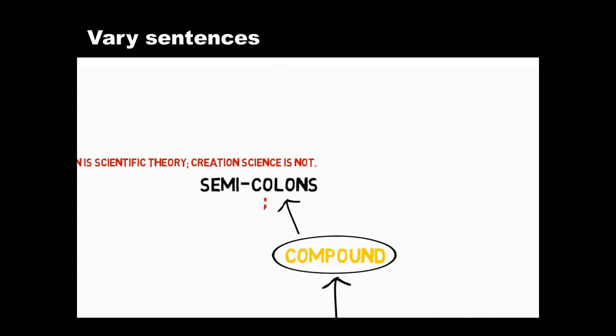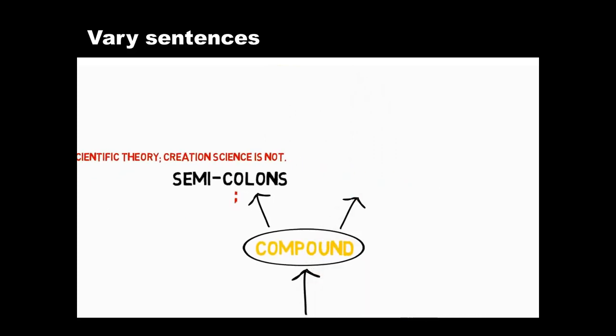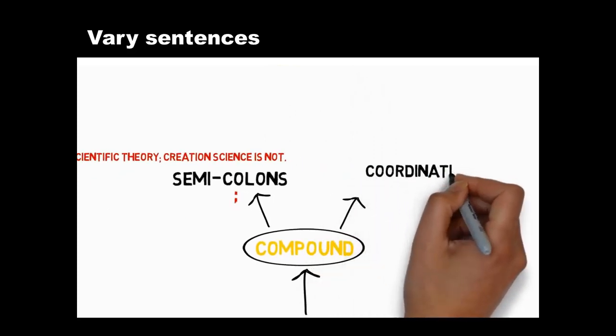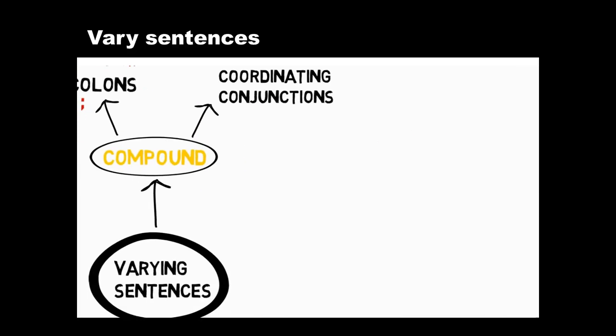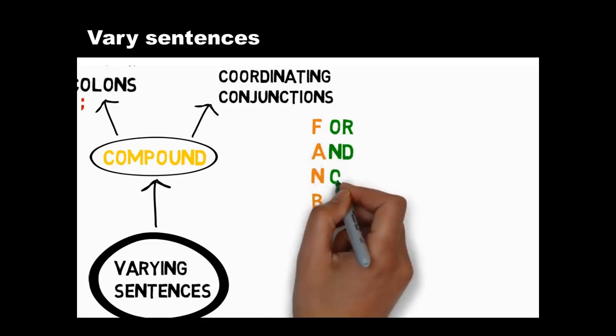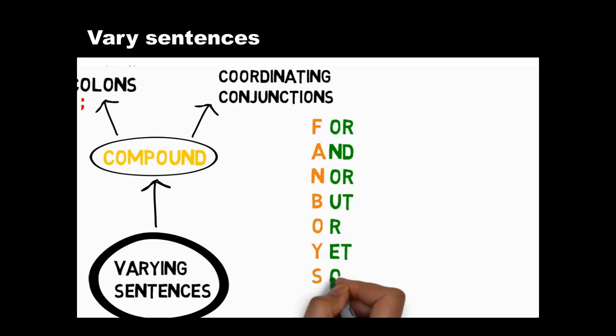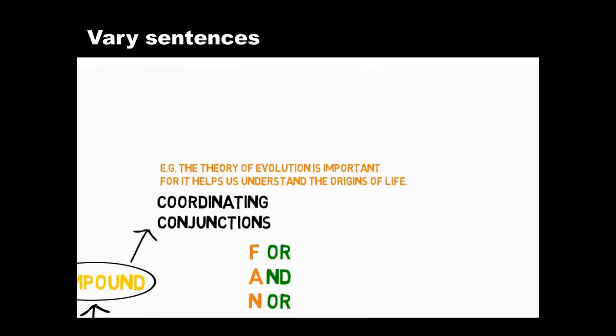The second kind of compound sentence uses coordinating conjunctions to join ideas. To remember what coordinating conjunctions are, just think of the word fanboys. Use the first letters of this word to remind you what they are. Coordinating conjunctions express simple relationships between equally important ideas like this.